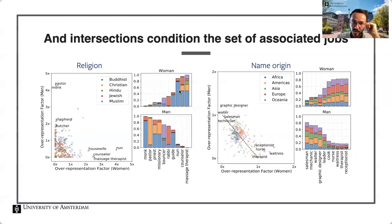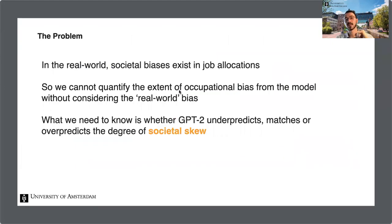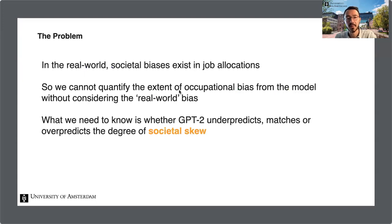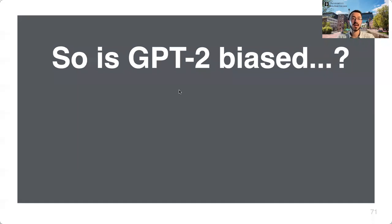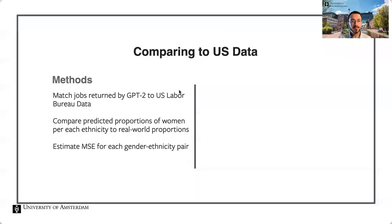The problem is that societal distributions are not truly equal across gender-intersection pairs — there is unfortunately unequal representation in the real world job market. So we cannot quantify occupational bias from the model without considering real-world bias. Critically, what we need to know is whether GPT-2 underpredicts, matches, or overpredicts the degree of societal skew. We reframe our analysis relative to ground truth data, matching predicted jobs returned by GPT-2 to categories in publicly available U.S. labor market statistics.